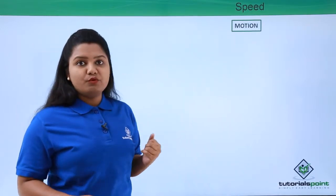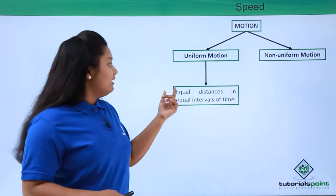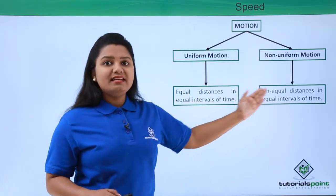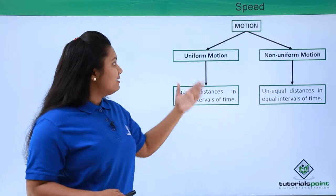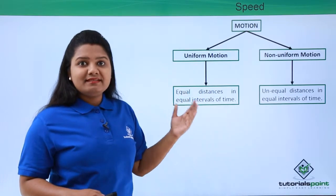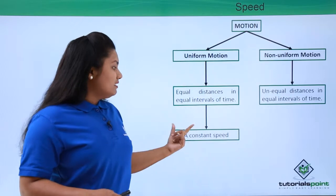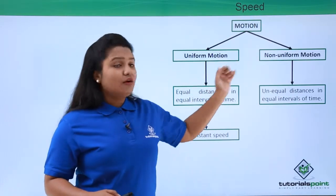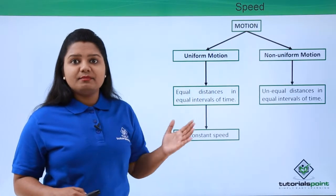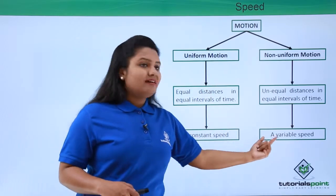We have learned about two kinds of motion: uniform motion and non-uniform motion. In uniform motion, an object covers equal distances in equal intervals of time, so the distance-to-time ratio — which we call speed — remains constant throughout the motion. For non-uniform motion, the object covers unequal distances in equal intervals of time, so the ratio of distance to time does not remain constant, and thus the object has a variable speed.